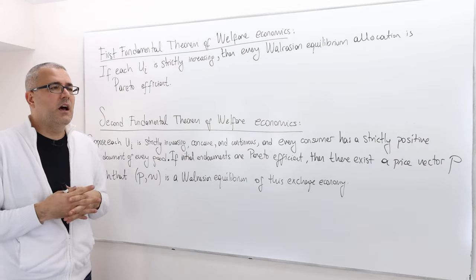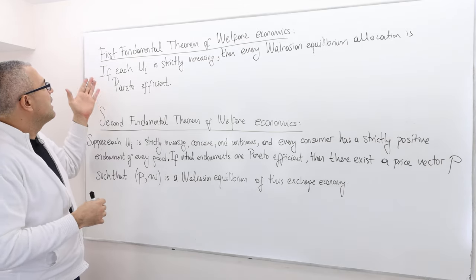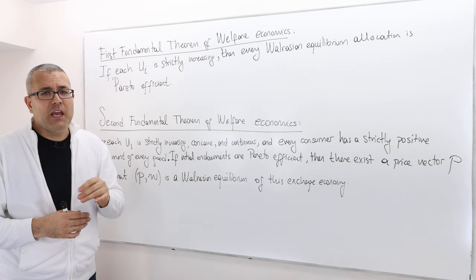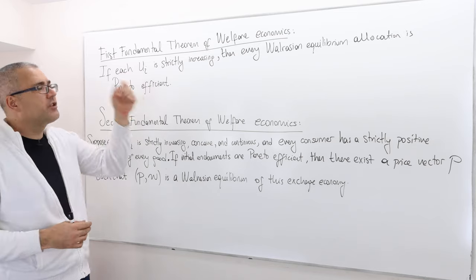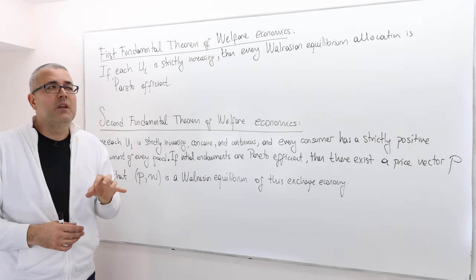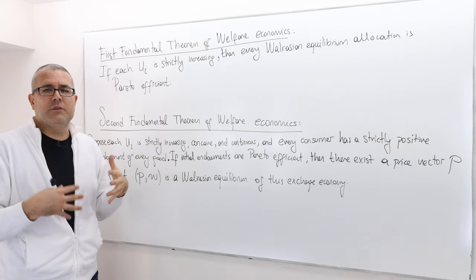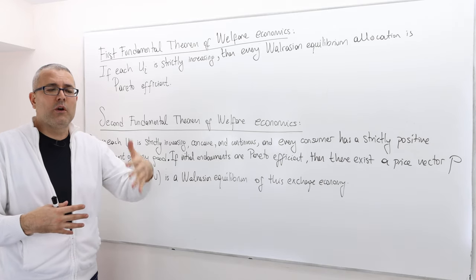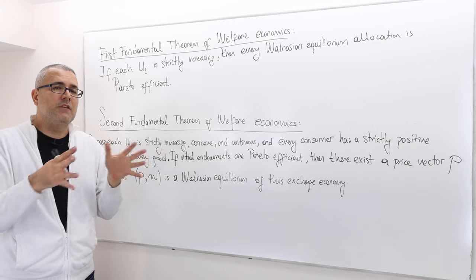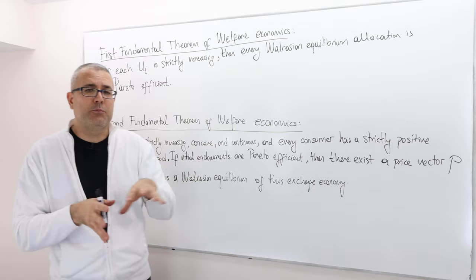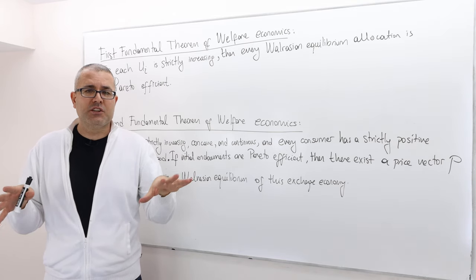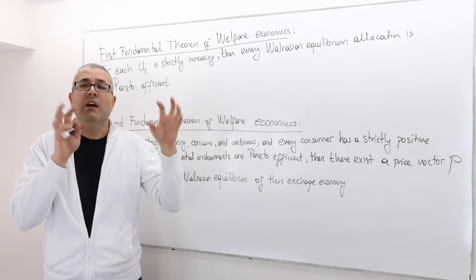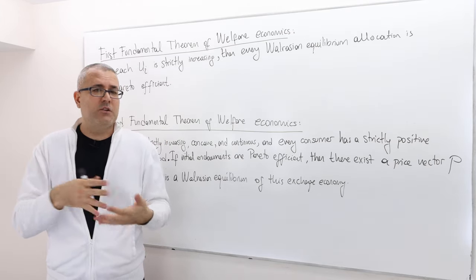Its statement is actually very basic and requires a very mild assumption. If each consumer's utility function UI is strictly increasing, then every Walrasian equilibrium allocation is Pareto efficient. Strictly increasing utility function for every consumer is key. However, it's a mild assumption in the sense that almost all the examples we work with in this course have strictly increasing utility functions, which basically says the more agents consume, the higher utility they get. So if this assumption holds, the Walrasian equilibrium allocation is Pareto efficient.